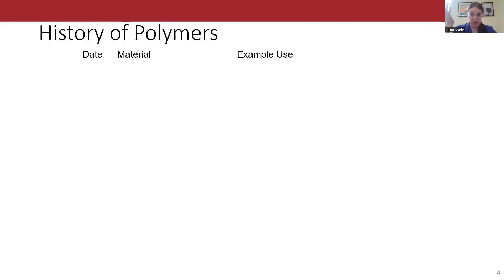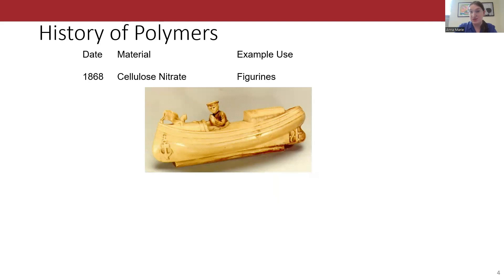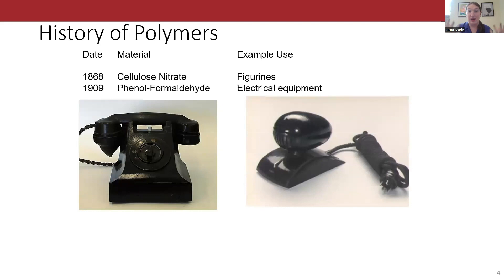Aside from rubber, some of the first commercial plastics were made of cellulose nitrate, a naturally derived compound that basically served to replace ceramics or ivory as material for making small decorative figurines. It wasn't until a few decades later that we started to use plastics in more robust applications, with bakelite and phenol formaldehyde making up those old-timey telephones and electronics.